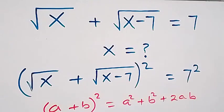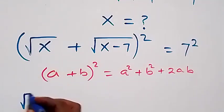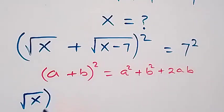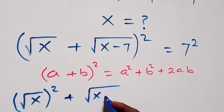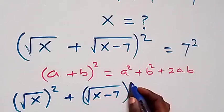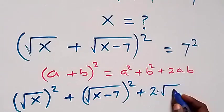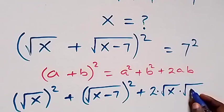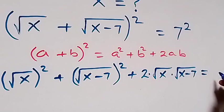We can write this as a squared plus b squared plus 2ab. Using this for the left hand side, with root x serving as a, we have root x squared, plus root x minus 7 squared, then plus 2 times root x times root x minus 7, equals 7 squared, which is 49.